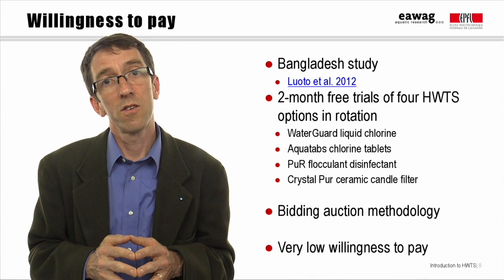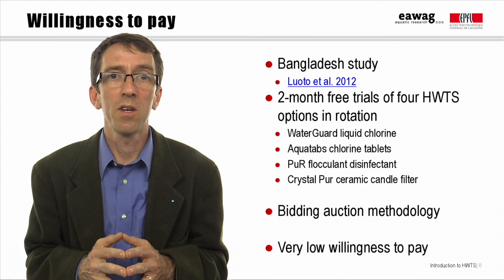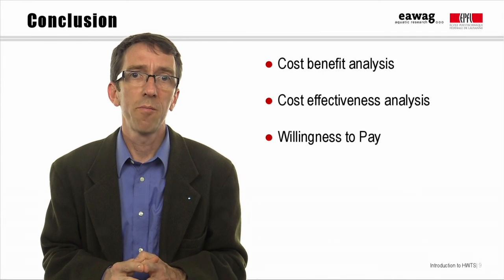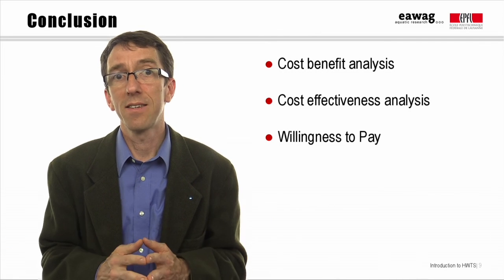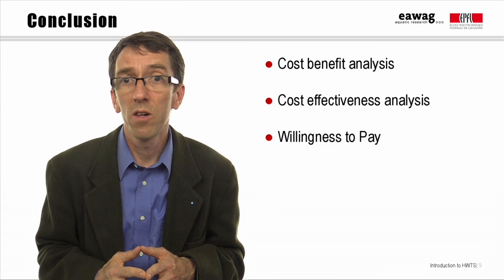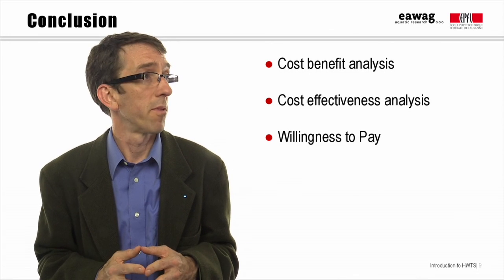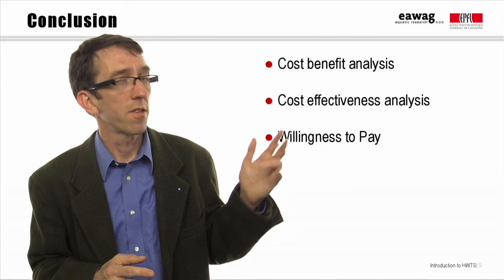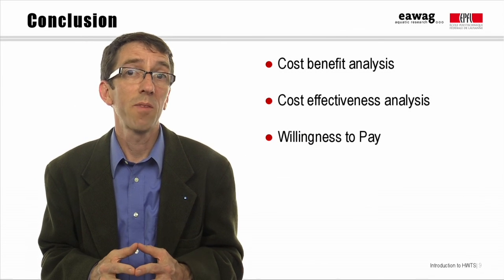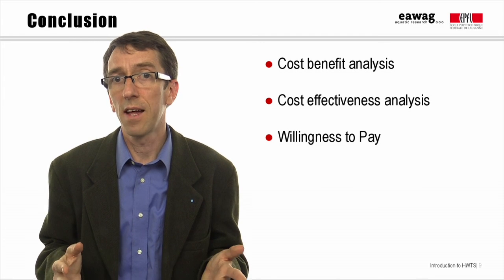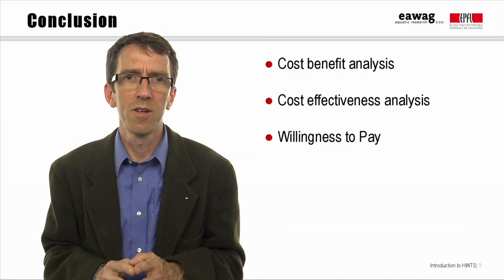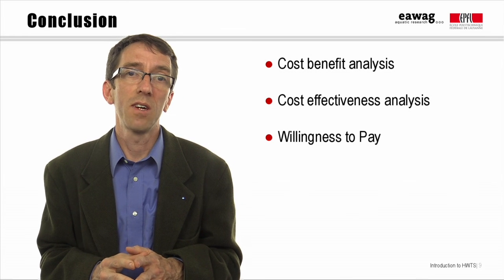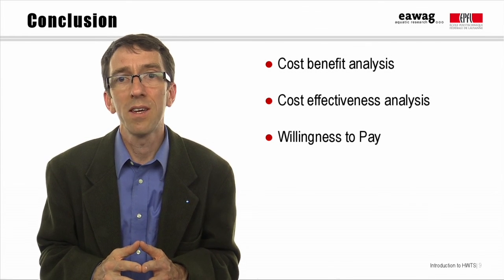This is a good study to examine for methods, and to serve as a reminder that people may not be willing to invest their own money in HWTS options, even when they consider their drinking water unsafe. That's a brief run through of some of the economic tools used to evaluate HWTS interventions. We saw that HWTS does fairly well in a cost-benefit analysis, with benefit-cost ratios well above five and comparable to other water and sanitation interventions with the highest ratios. In two cost-effectiveness analyses, HWTS can be extremely cost-effective in terms of cost to avert DALYs, and SODIS and chlorination are particularly cost-effective options due to their low cost. Finally, in at least one setting, willingness to pay for different HWTS options can be quite low, even when water quality is perceived as unsafe.